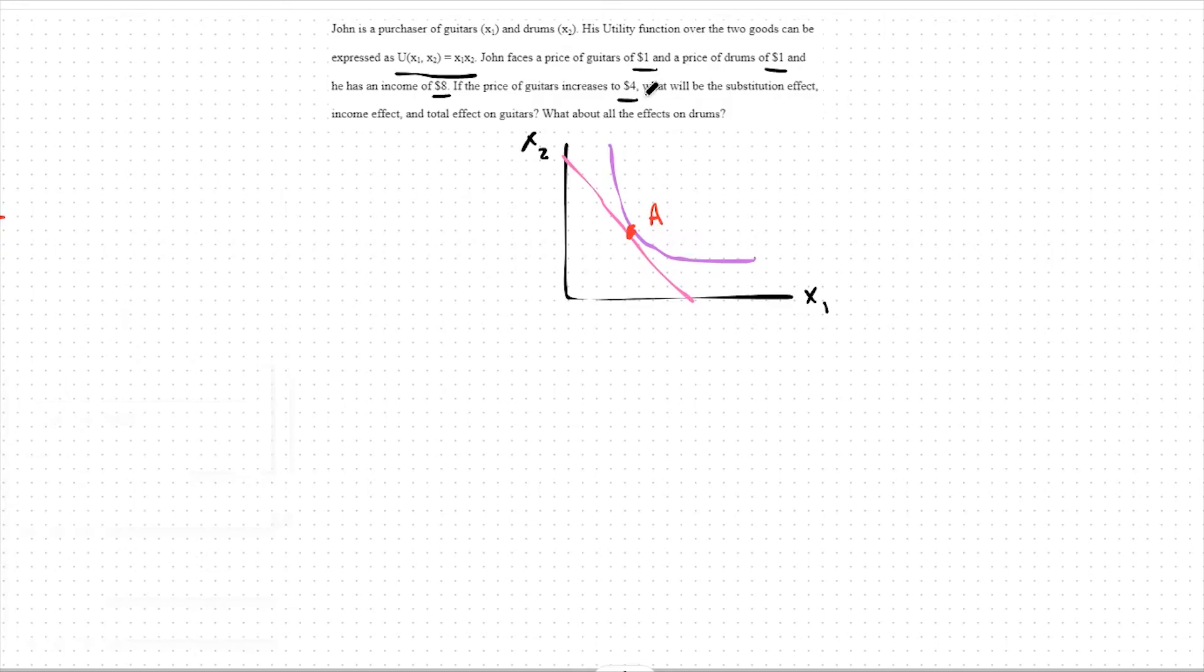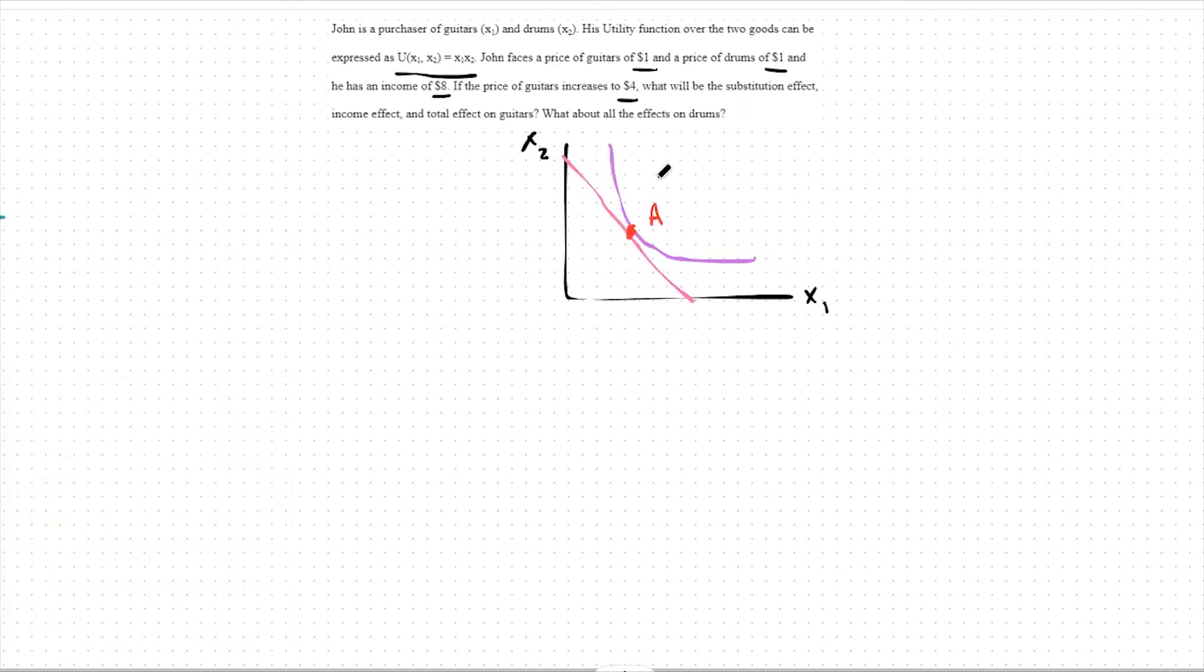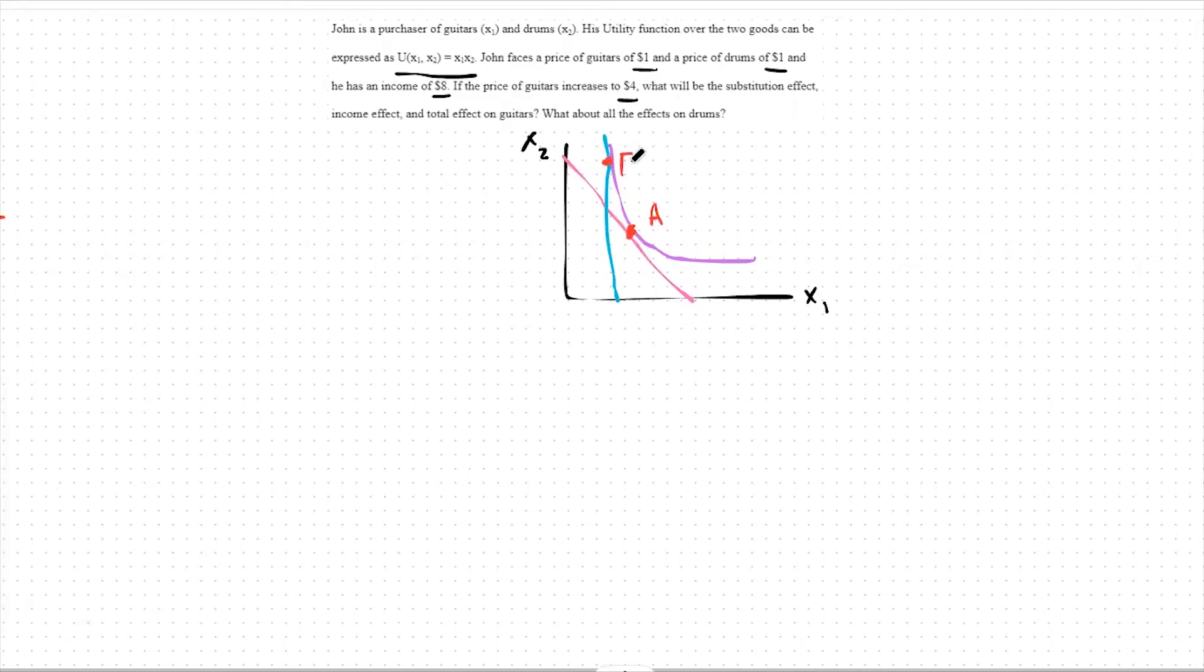Now, we have to dissect the price change that occurs in the problem. There's going to be two types of effects that occur due to this price change. The first will be the substitution effect. The substitution effect tells us that we should move away from the good that is now relatively more expensive and towards the good that is relatively less expensive. This means that we'll be somewhere up here. Notice that with the substitution effect, we stay at the same utility level as point A, as we're on the same indifference curve as before. But we subject this indifference curve to the new prices.